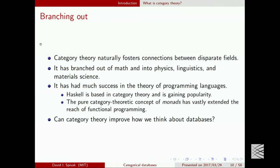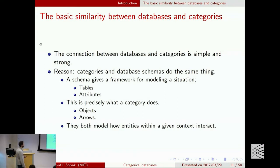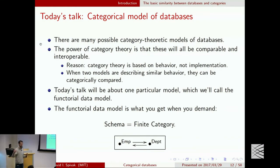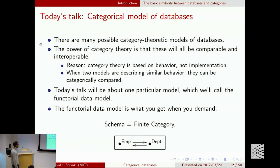Category theory has been branching out into physics, linguistics, material science, and of course computer science. The connection to databases is that categories and database schemas are doing the same thing: a schema gives you a framework for modeling a situation, with tables and attributes — and that's exactly what a category does, with objects and arrows. Objects are to tables as arrows are to attributes.